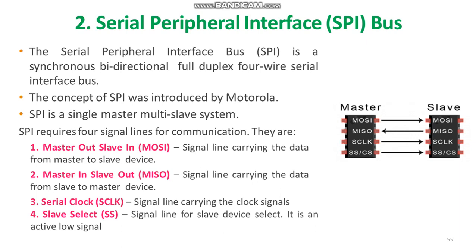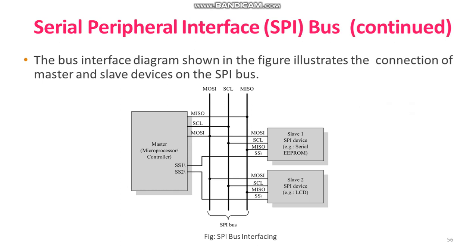MOSI is a signal line carrying the data from the master to the slave device. MISO is a signal line carrying the data from the slave to the master device. Sclock is a signal line carrying the clock signals. SS is a signal line for slave device select and is an active low signal — if there are n number of slaves, this signal helps in selecting the appropriate slave. The diagram shows the interface between the master and slave devices on an SPI bus, with MOSI, SCL, MISO, SS1 and SS2 for two slaves.